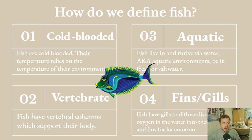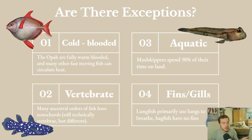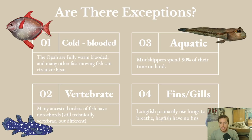These rules don't always apply, and you'll see that when we look at exceptions. For cold-blooded, there's the opah, which is a fully warm-blooded fish — not to the extent that mammals are, but warm-blooded nonetheless. Fast-moving fish like tuna are also able to circulate heat in their bodies, so they don't fit the cold-blooded definition. As for vertebrates, there are ancestral orders of fish with notochords — basically ancestral versions of vertebrae — and some fish like hagfish where the actual presence of vertebrae is debatable, with potentially some fish families having no vertebrae at all.